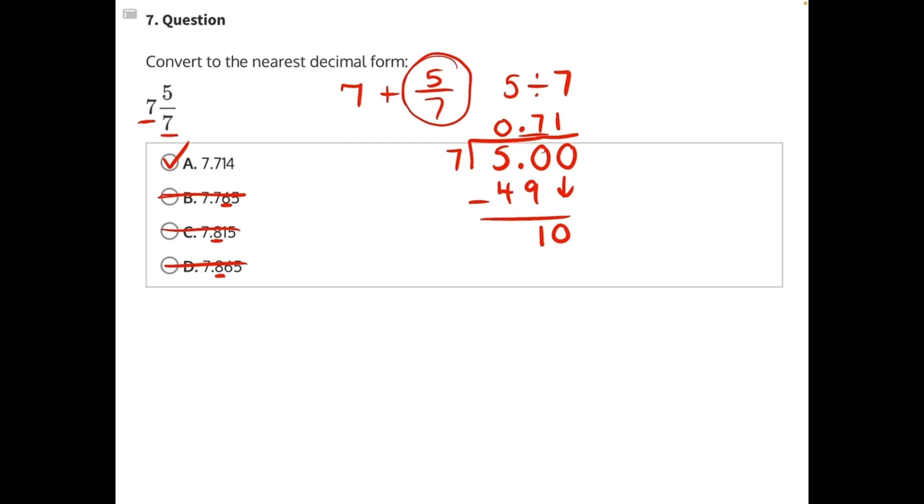From here, we would have 7 times 1 is 7. We would subtract. 10 minus 7 is 3. Add another 0 and bring it down. 7 can go into 30 four times. 7 times 4 is 28. We subtract. We are left with 2, and it will keep going.